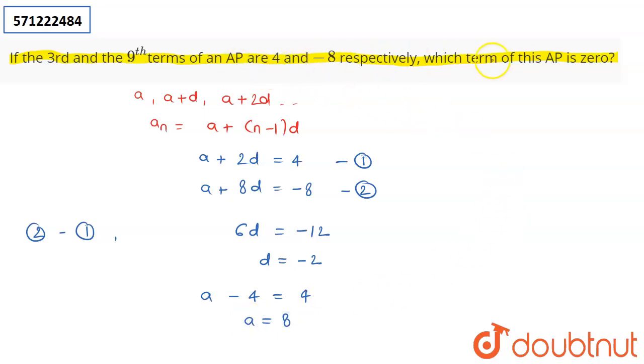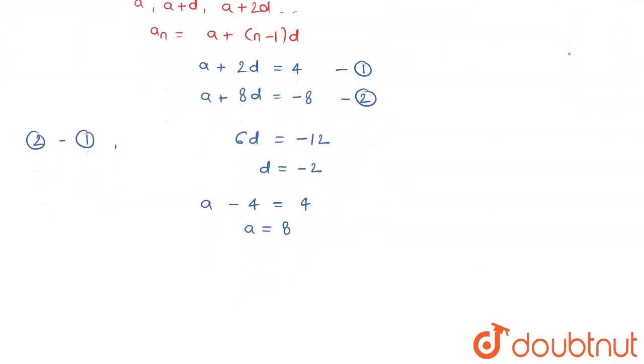Now I am asked which term of this AP is 0. I do not know which term of the AP will be 0, so I'm assuming that it will be my nth term. My nth term of the AP is going to be 0, so I have to find out the value of n.